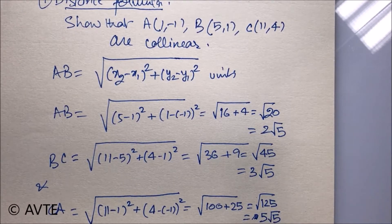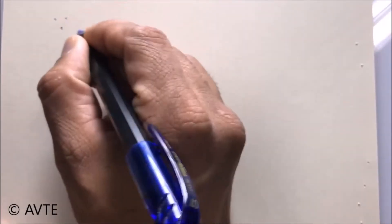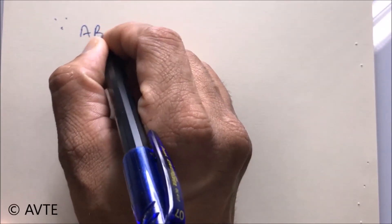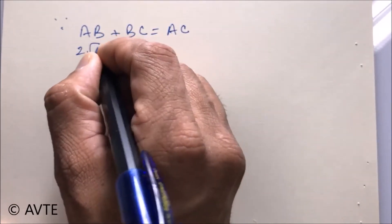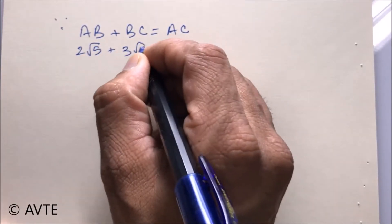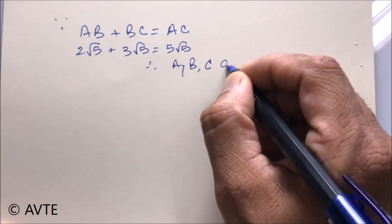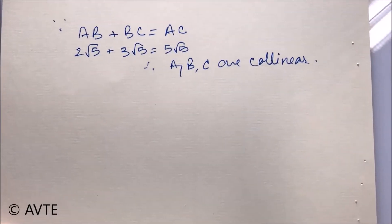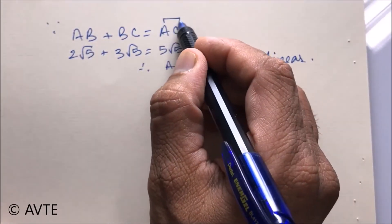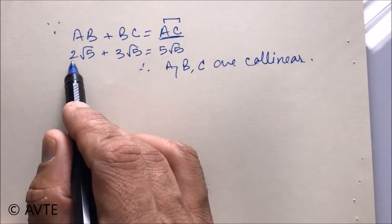So what is your conclusion? The conclusion is that the sum of AB plus BC is CA. Distance AB plus BC is AC. That is 2 root 5 plus 3 root 5 is equal to 5 root 5. Therefore, A, B, and C are collinear. And you can also tell examiner that AC is the longest side and point B is inside and it is dividing the segment in the ratio 2 is to 3.